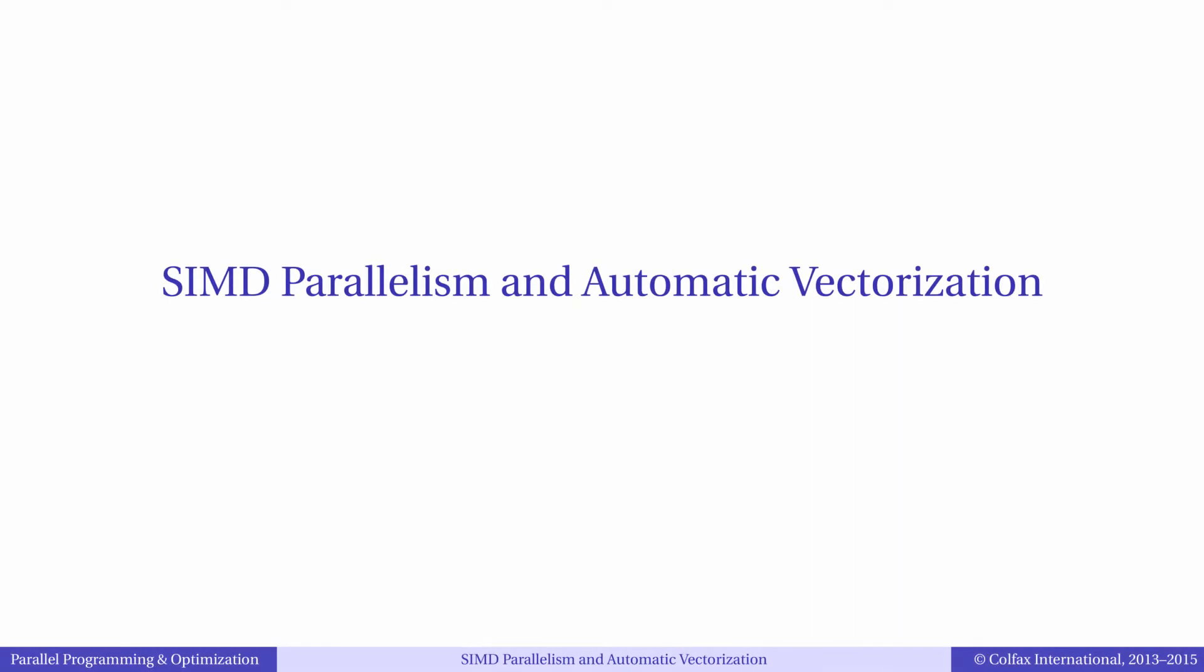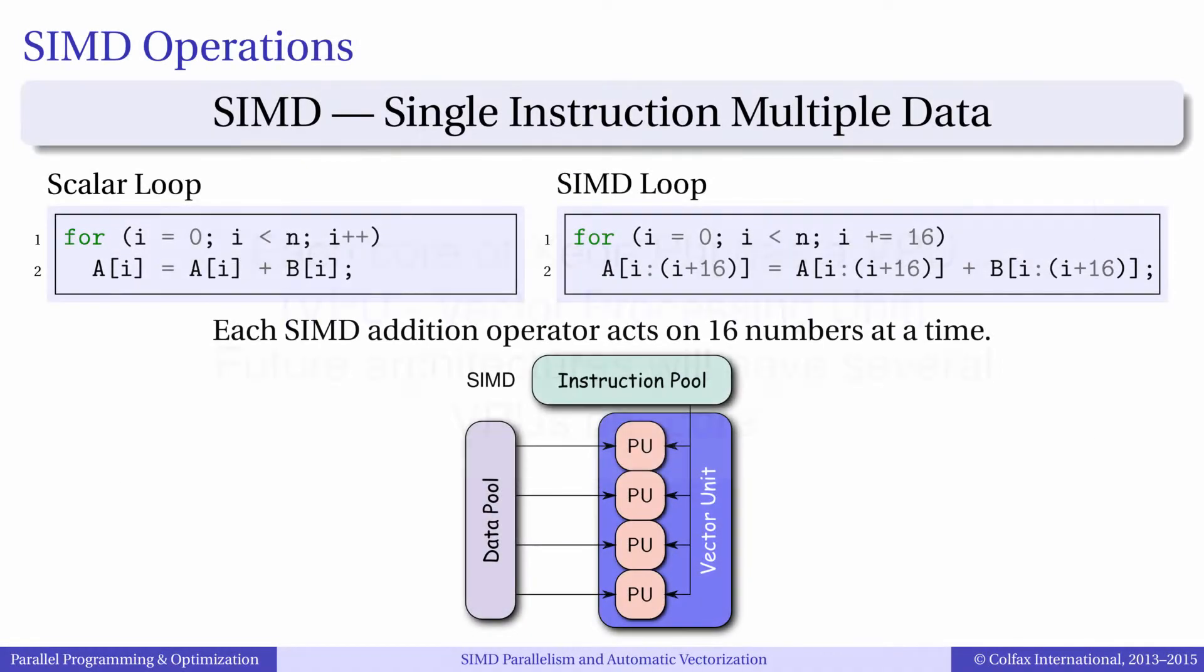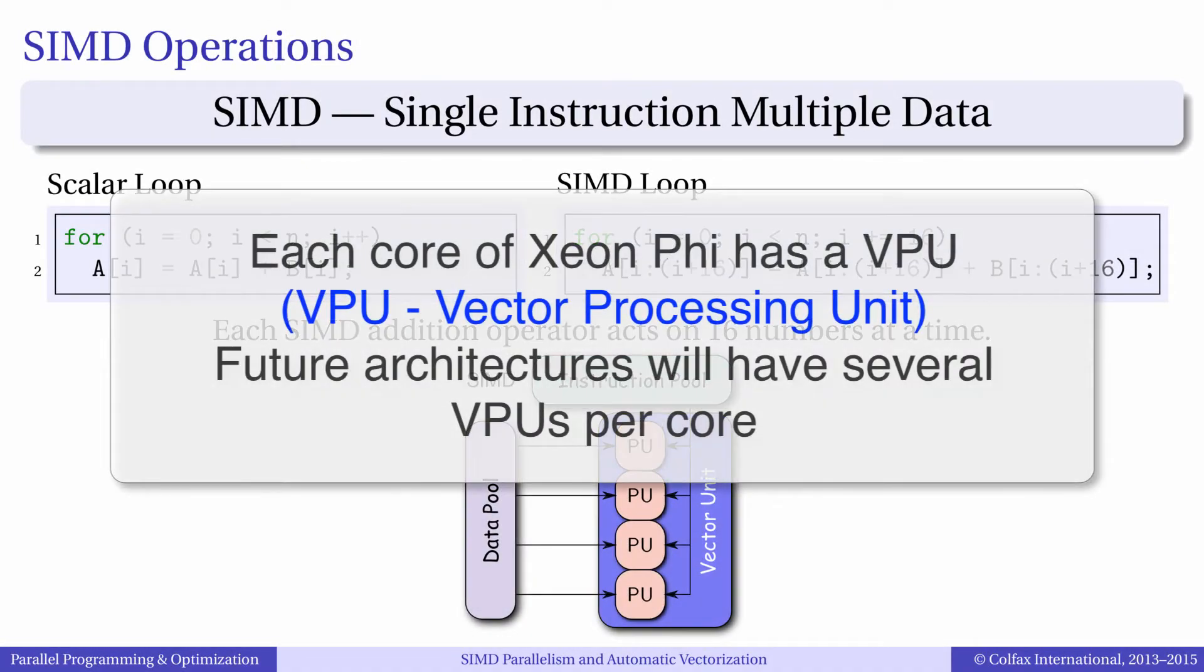We will begin the chapter with a discussion of expressing data parallelism. This is necessary to take full advantage of vector processing units in every core of Intel Xeon Phi processor.